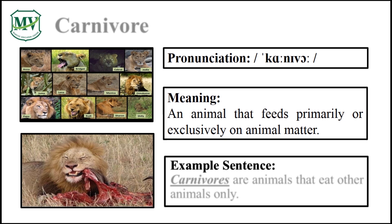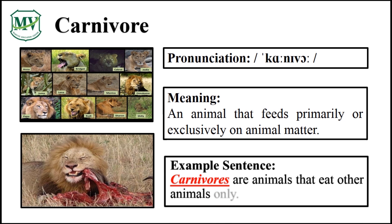Please repeat the word after me. Carnivore. Good job! Let's spell it. C-A-R-N-I-V-O-R-E. Carnivore. Great! Carnivores are animals that eat other animals only. Can you try reading the sentence on your own?